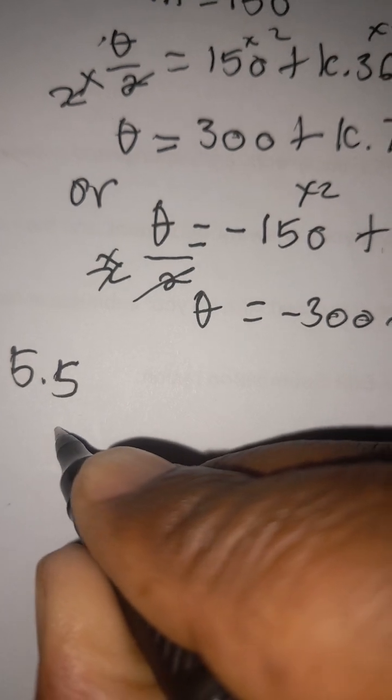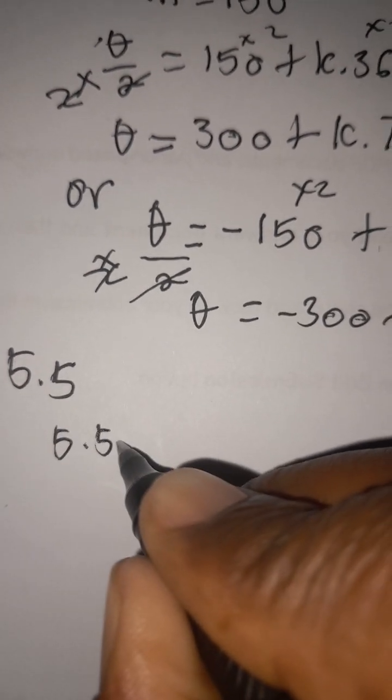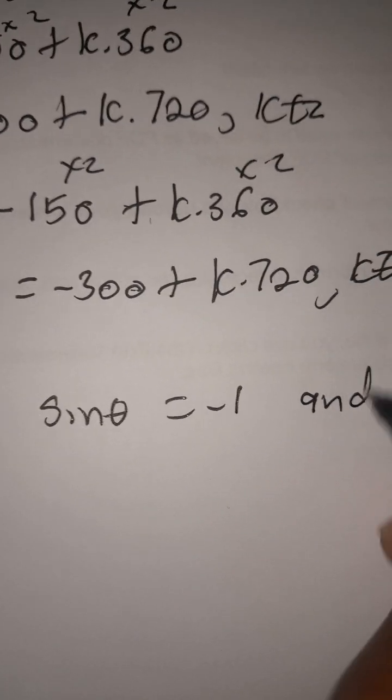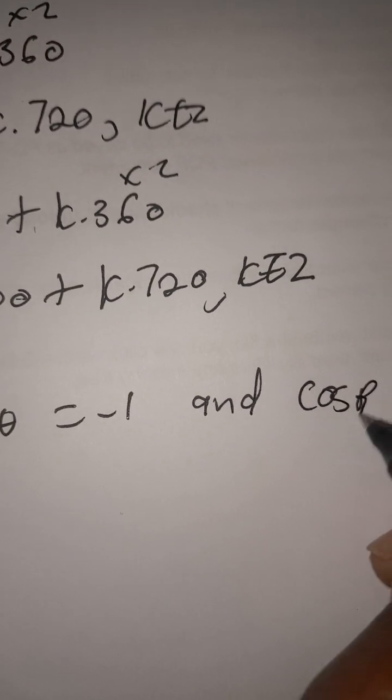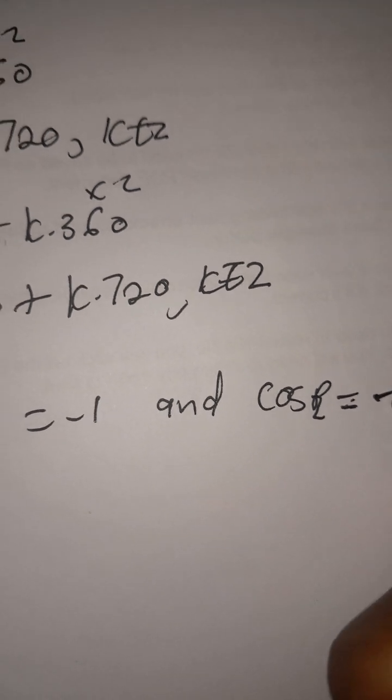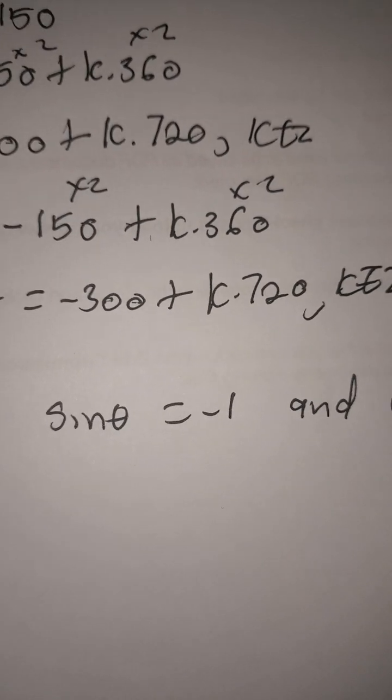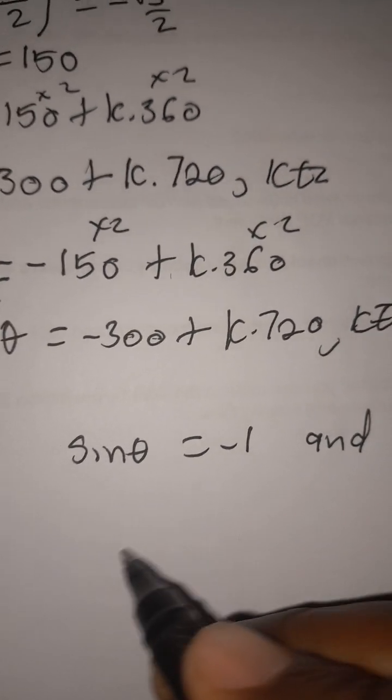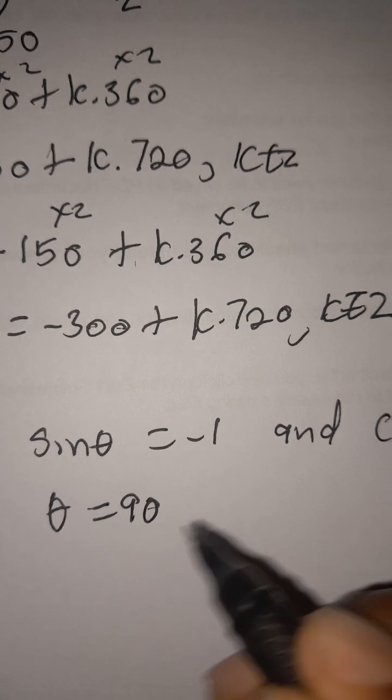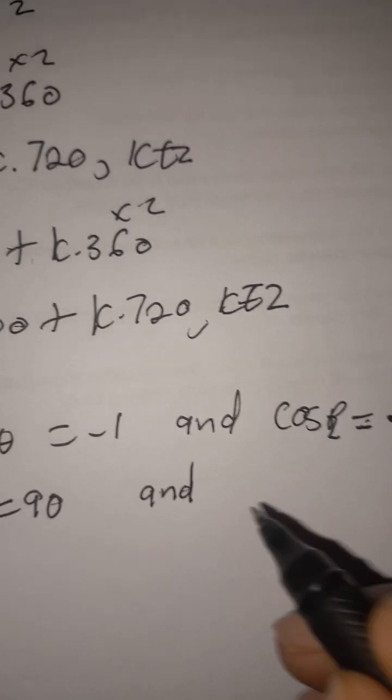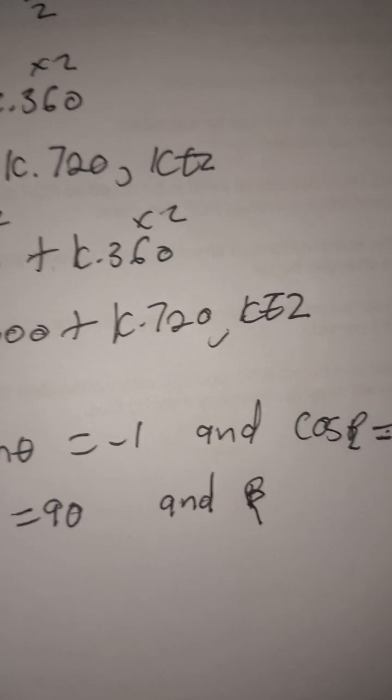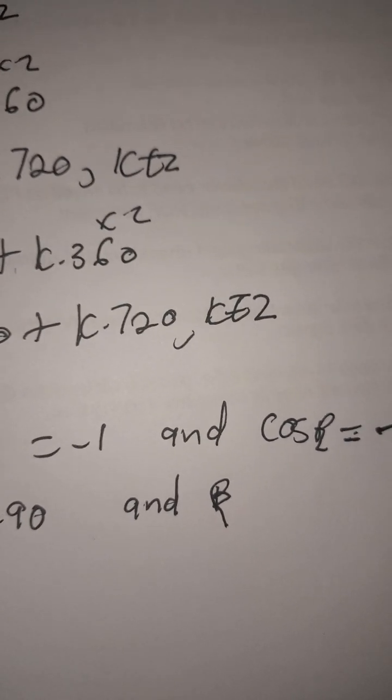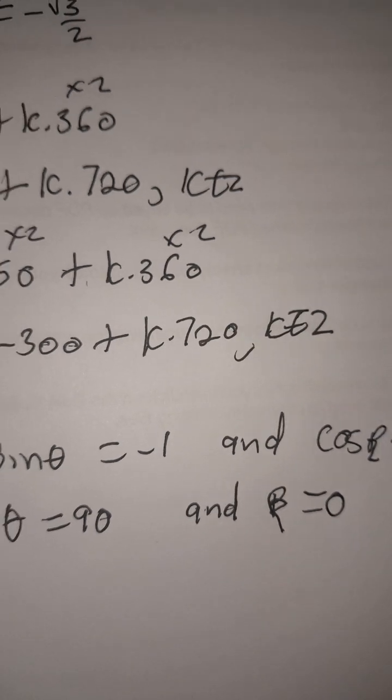At 5.5.2, I'm given sin theta equals negative 1, and cos beta equals negative 1. Punch it in a calculator. When we say second function of negative 1 for sin theta, we get theta as 90. Let's go for beta. Punch it in second function. We get 0.